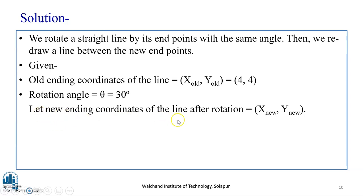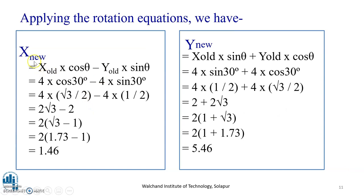Thus, the new ending coordinates of the line after rotation are X-new and Y-new. We calculate them using the equations of rotation as shown on the screen. We have obtained X-new is equal to X-old into cos theta minus Y-old into sin theta. That is, 4 into cos theta minus 4 into sin theta. We get 4 into root 3. Cos theta value is root 3 by 2, whereas sin theta value is 1 by 2. After multiplication, we get 2 root 3 minus 2. Solving the brackets, we have 2 times root 3 minus 1, that is 1.73 minus 1, and therefore we have the X-new coordinate as 1.46.